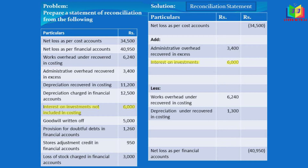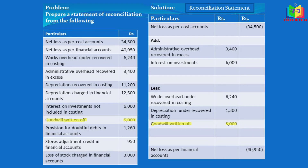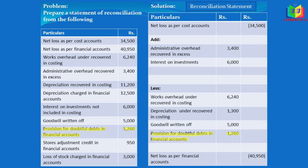The next item is interest on investment not included in costing. This is an income and it is not there in costing, so it is understated income. This will reduce the profit, so in order to rectify we have to add it. The next one is goodwill written off — this is an expense of financial account, so in costing it is understated. Understated expenses will increase the profit, so we have to subtract it.